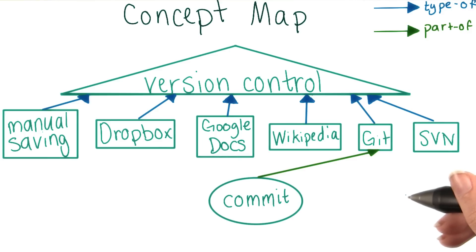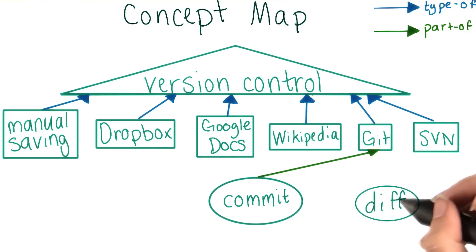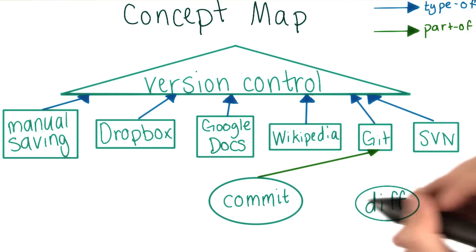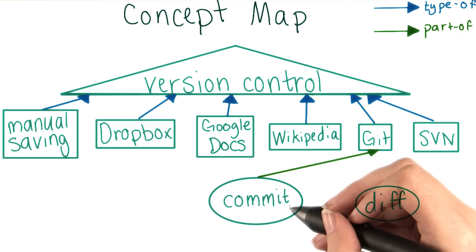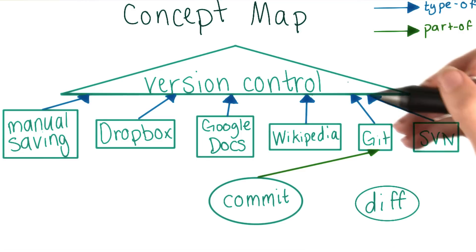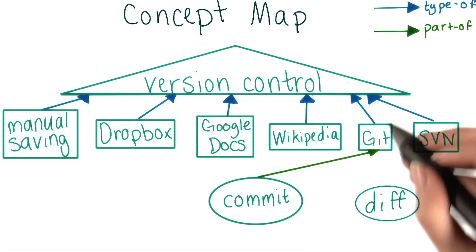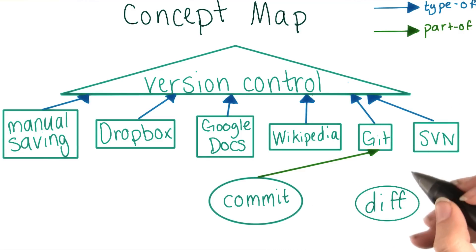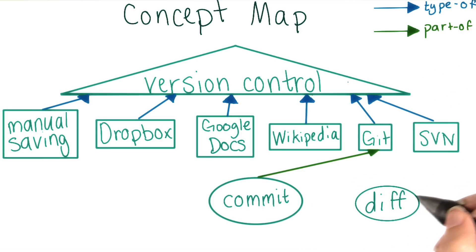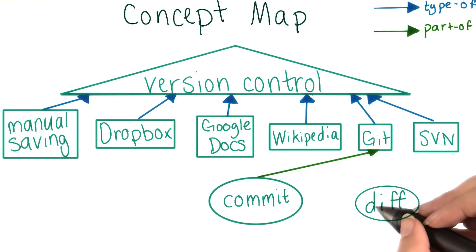So where should we add diff? Diff is clearly related to both get and commit, and also to version control, more indirectly. But like we said, we don't want to add all these second order connections.